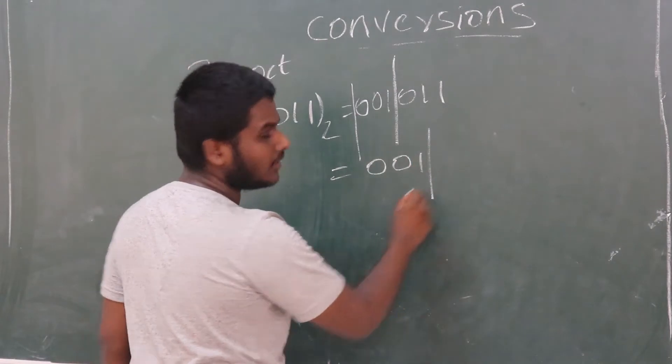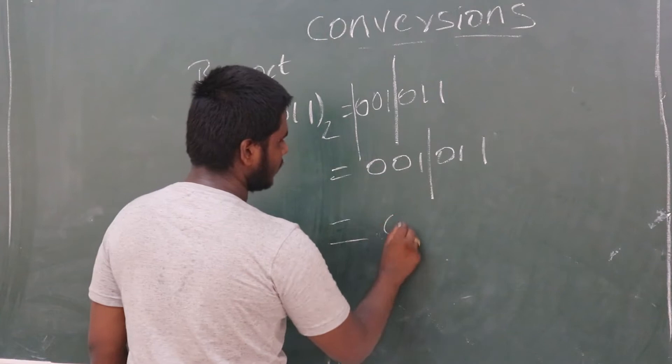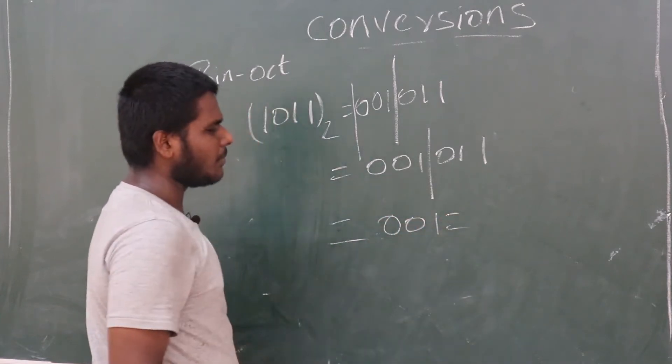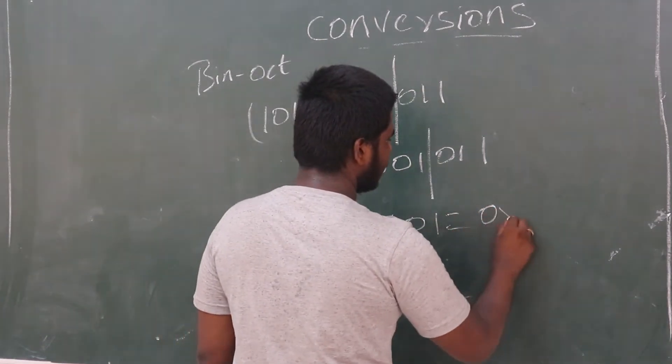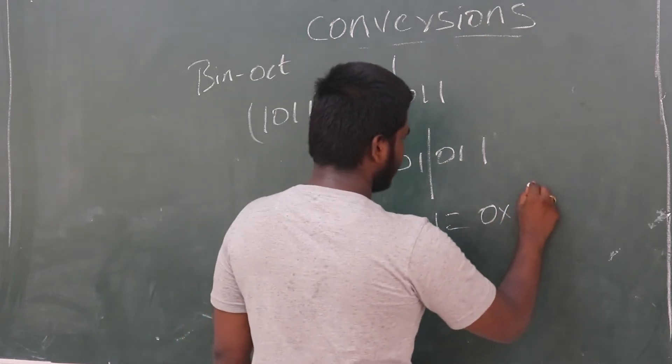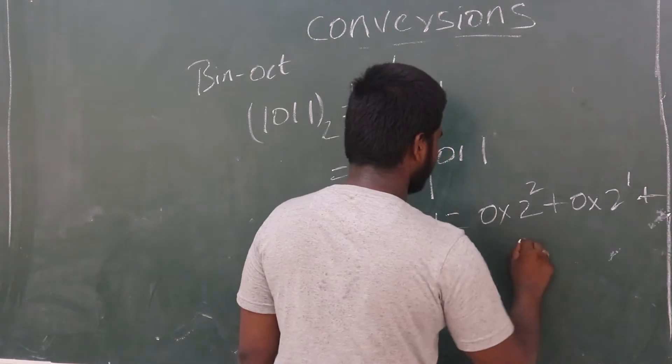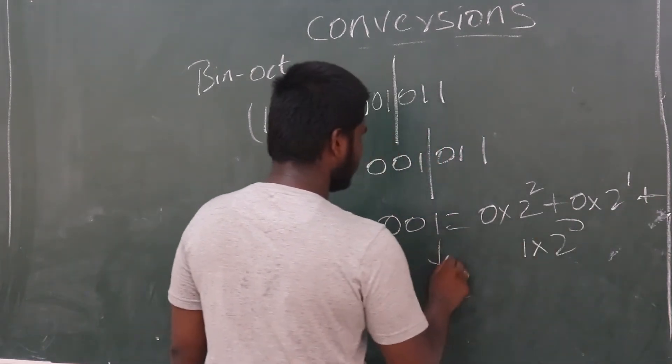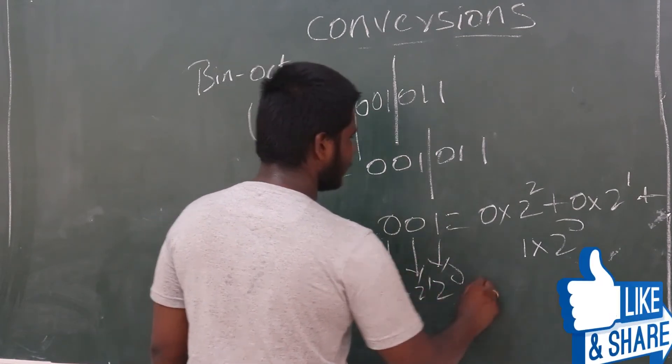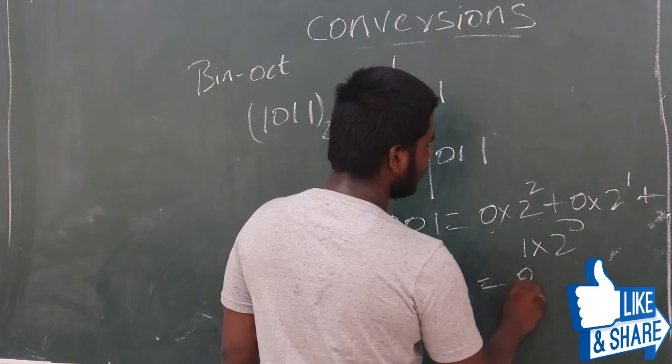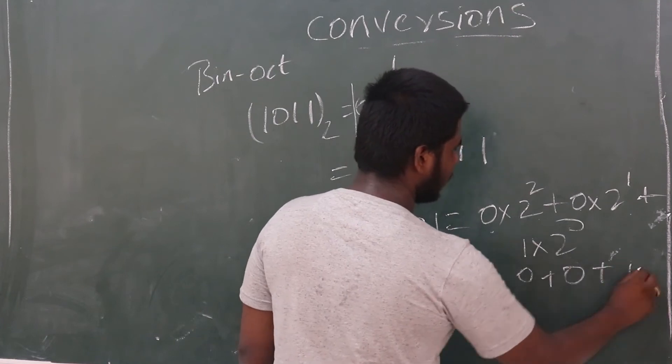001 and 011. First, we will take 0, 0, 1. Now, we will find the binary to decimal. We will solve here. 0 into 2 square plus 0 into 2 power 1 plus 1 into 2 power 0. This is 2 power 0 coefficient, this is 2 power 1, this is 2 square. So, 0 into anything is 0, plus 0 into anything is 0, plus 1 into 2 power 0 is 1. Total 1.